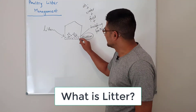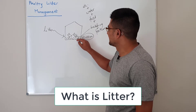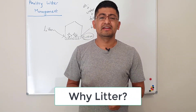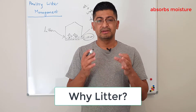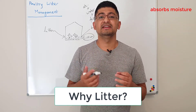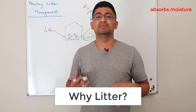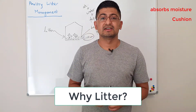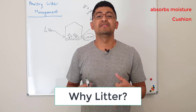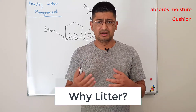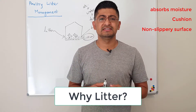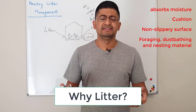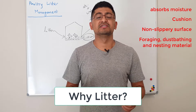If litter is too thin it may not act as an insulating material, and if litter is too thick that might be too expensive. So what is the function of this litter material? Litter basically absorbs moisture, because in poultry feces there is a lot of moisture and litter helps to absorb that so it doesn't get in contact with the skin and feet. Litter also acts as a cushioning material, provides a non-slippery surface, and can be used by chickens as foraging material, dust bathing material, and nesting material.